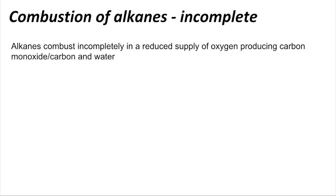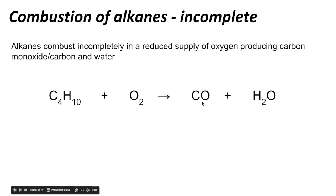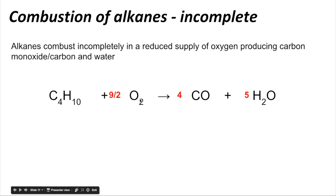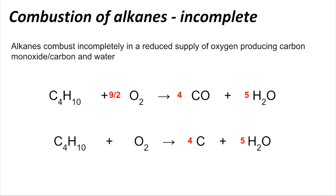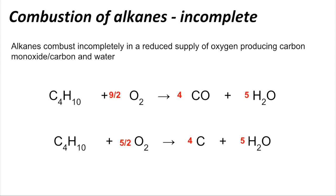Incomplete combustion happens when there is a reduced supply of oxygen. There are two scenarios: you can get carbon monoxide and water, or carbon and water. Using butane again for the first scenario, we get CO instead of CO2 — so four COs and five waters, giving nine oxygens, so we need 9/2 O2. For the second scenario producing carbon: four Cs and five H2Os, but now only five oxygens on the right, so we need 5/2 O2 to balance the equation.